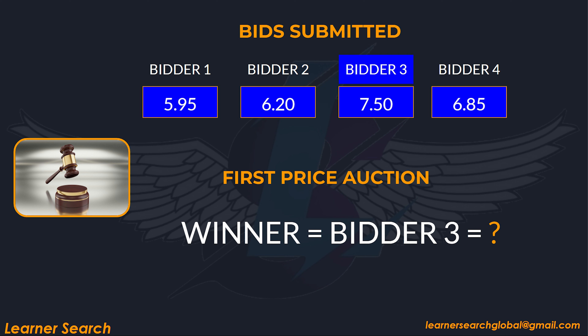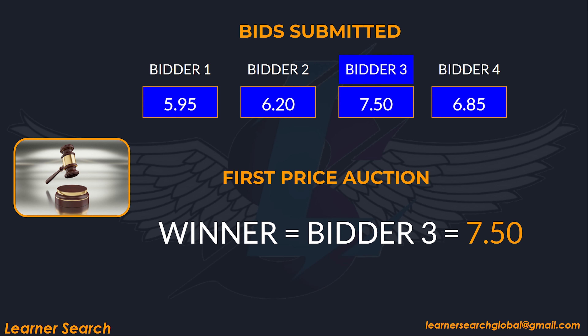In a first price auction, the winner pays exactly what they bid. So Bidder 3 shells out $7.50 to win the auction, and all other bids are ignored.